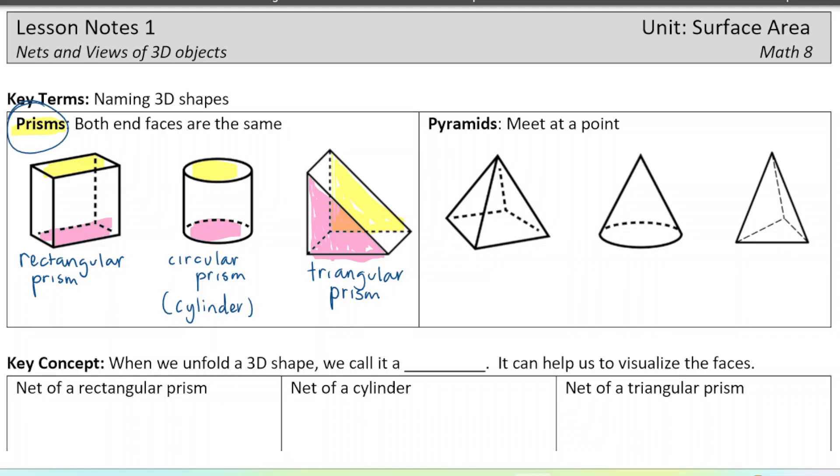But another shape that is good to know the name of is a pyramid. Now, pyramids just come to a point instead of having the same shape on either side. So this one is a square pyramid or rectangular pyramid, depending on if that's a square on the bottom. This one is a circular pyramid. You could also call that by its common name, which is the cone.